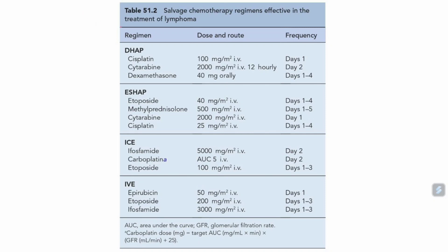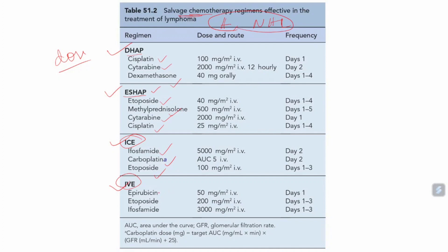Salvage chemotherapy regimens include: DHAP — Cisplatin, Cytarabine, Dexamethasone; ESHAP — Etoposide, Methylprednisolone, Cytarabine, Cisplatin; ICE — Ifosfamide, Carboplatin, Etoposide; and IVE — Epirubicin, Etoposide, Ifosfamide. These salvage regimens are given when initial therapy fails.